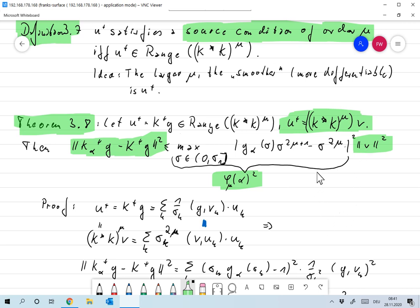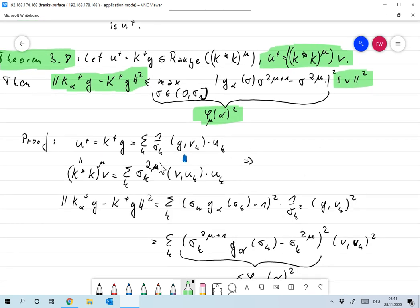And the proof is hopefully relatively simple. First of all, we have that U+ is K^+ G, so that's the definition. Of course the idea is, I didn't write this down, G of course must be in the definition, in the domain of K^+. So then we can write U+ as 1 over σ_K, ⟨G, V_K⟩ times U_K. On the other hand,